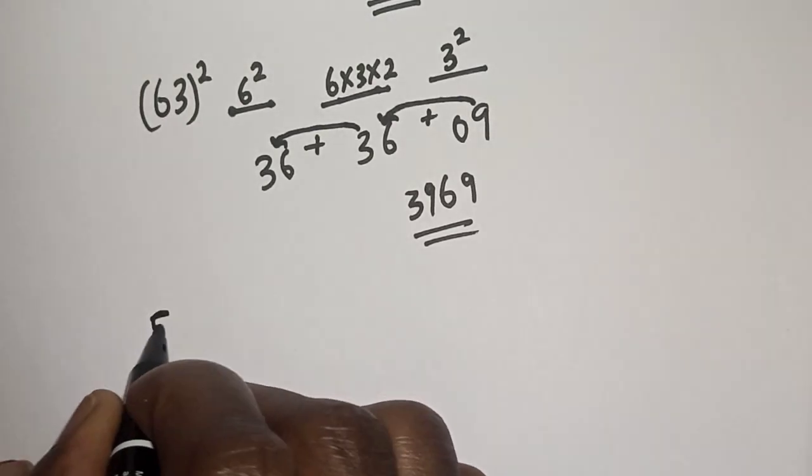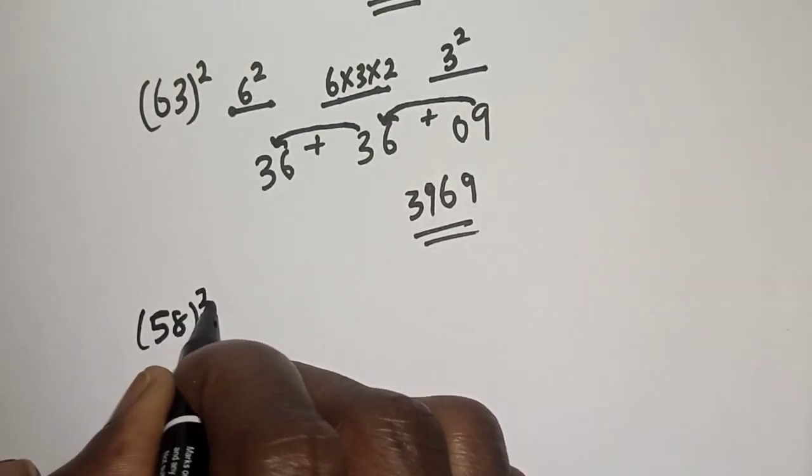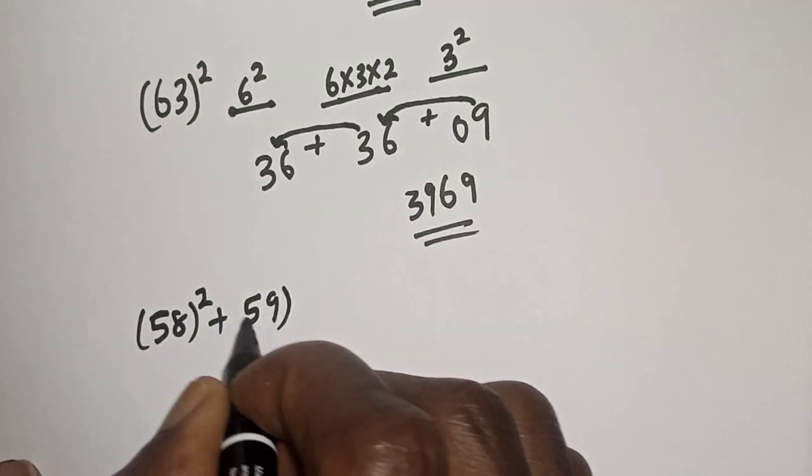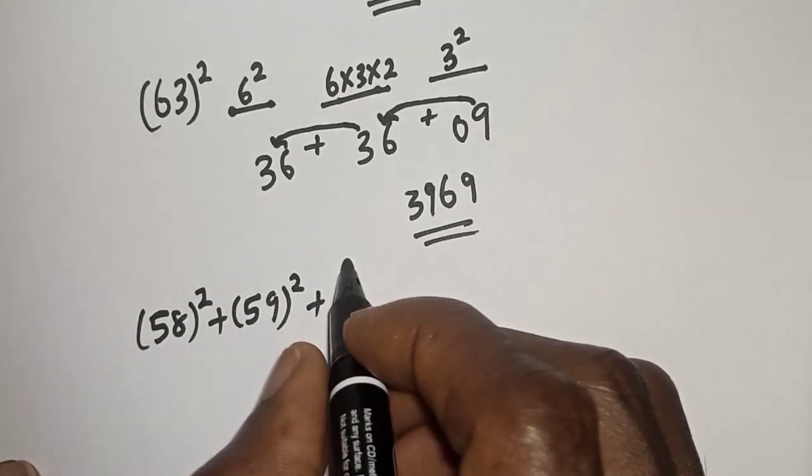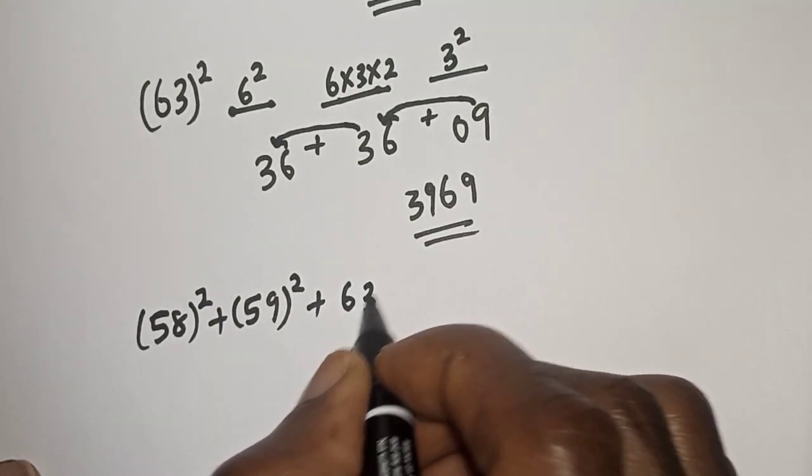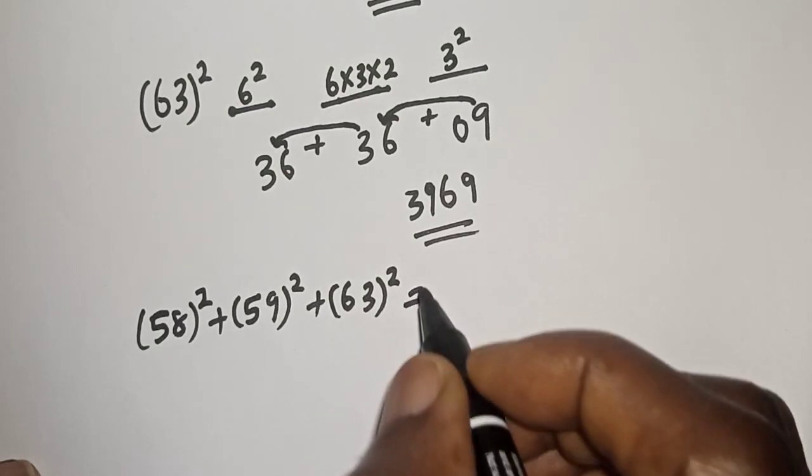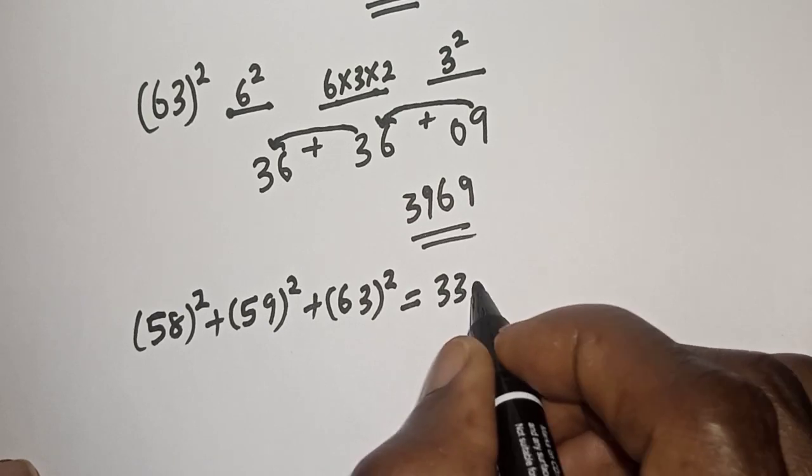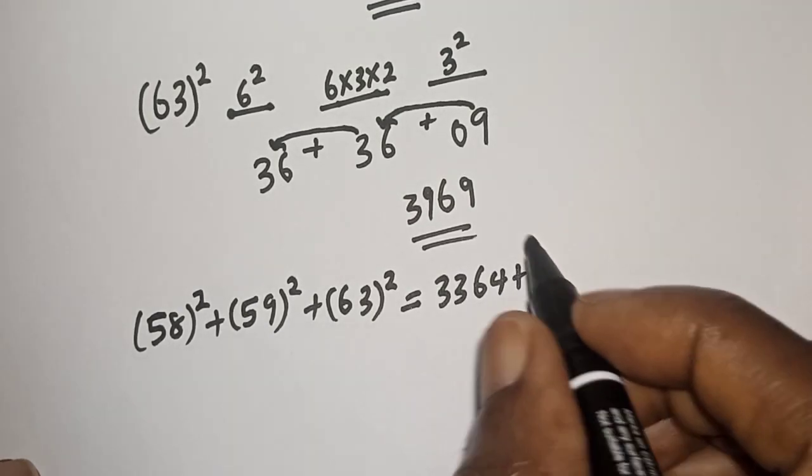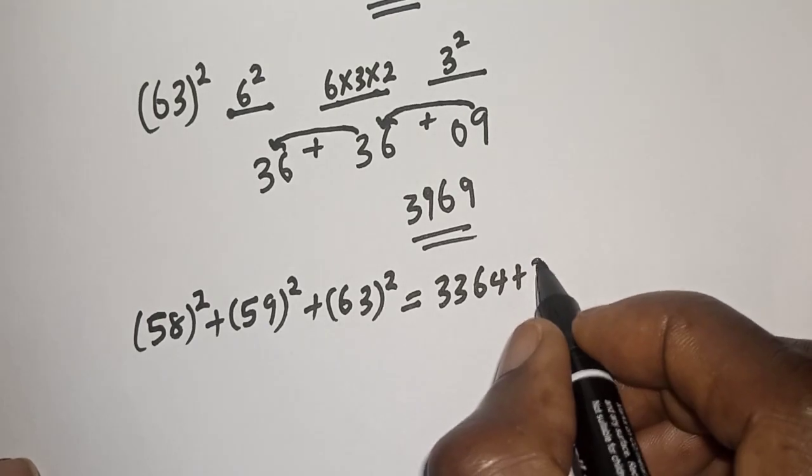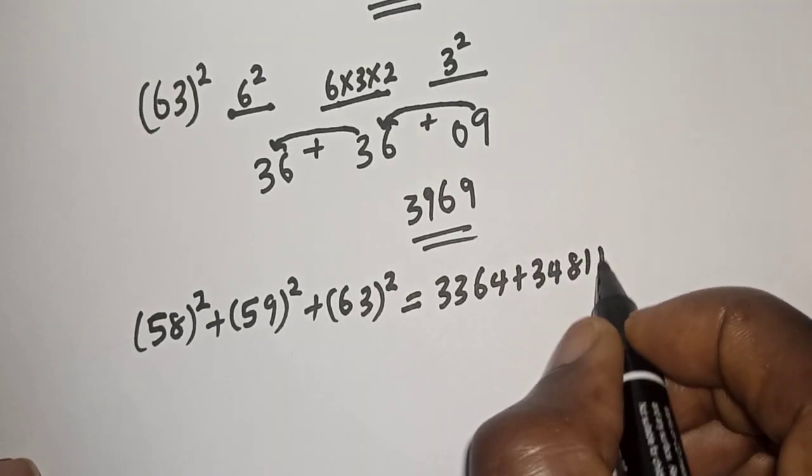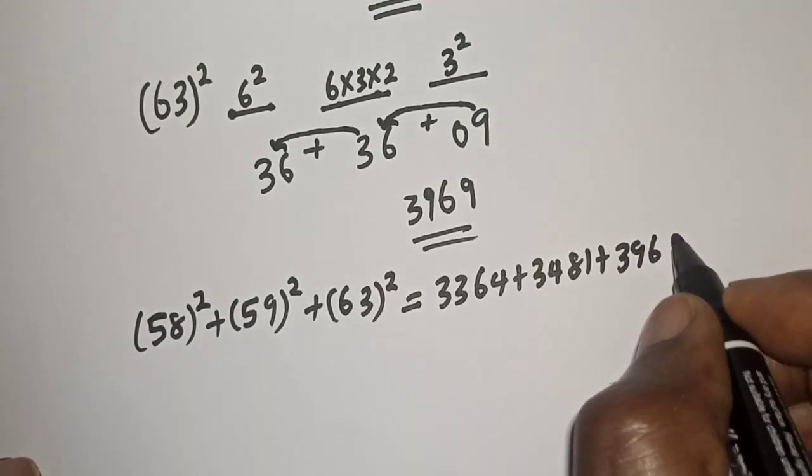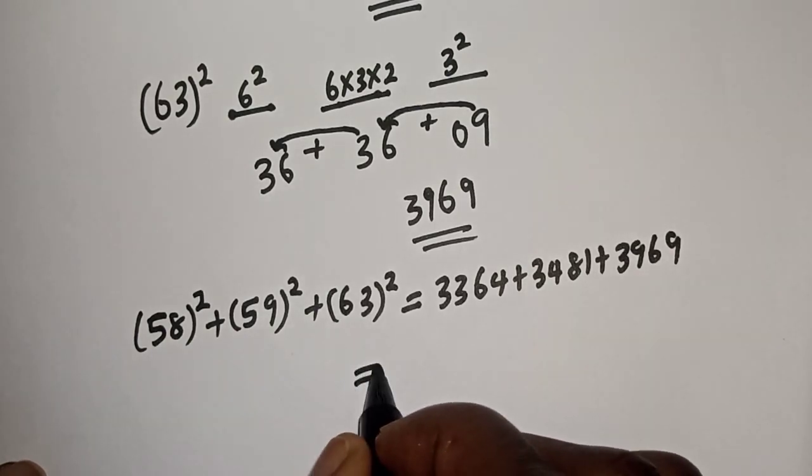Therefore, 58 square plus 59 square plus 63 square is equal to the first one is 3364 plus 3481 plus 3969. This is equal to 3364,